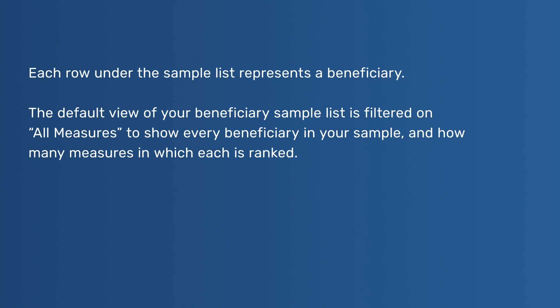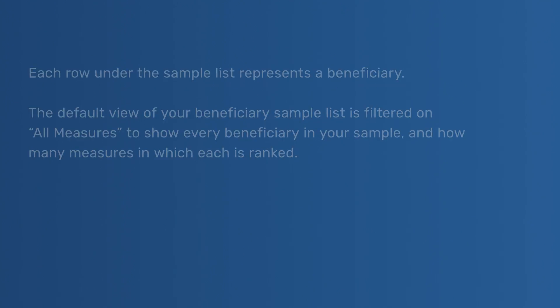Beneficiary Details – Each row under the sample list represents a beneficiary. The default view of your beneficiary sample list is filtered on all measures to show every beneficiary in your sample and how many measures in which each is ranked.